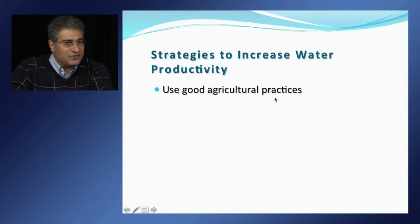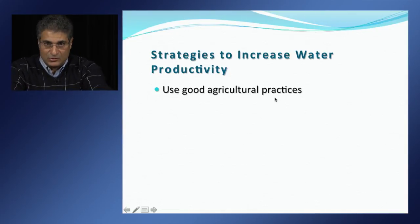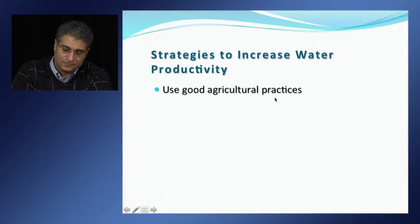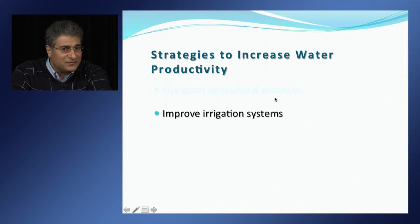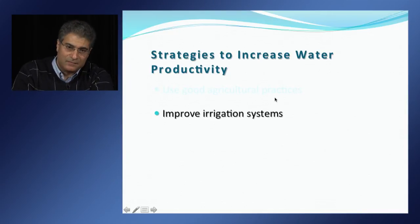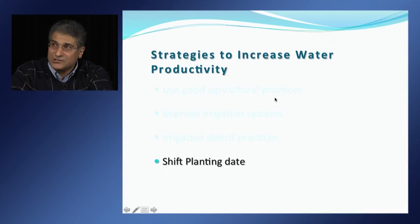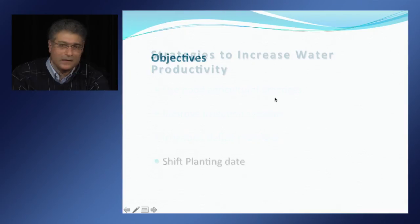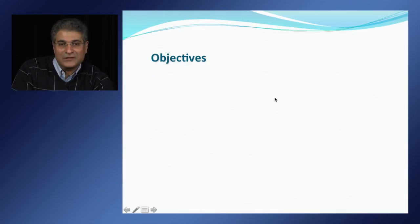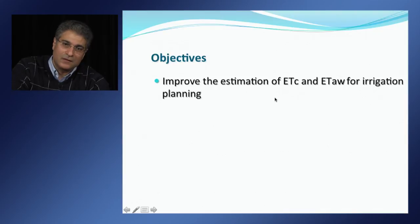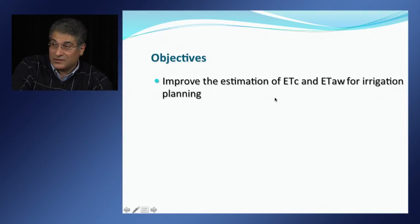Here are some of the strategies that we can use to increase water productivity: use good agricultural practices, improve existing irrigation systems for applying irrigation water more efficiently, conduct irrigation deficit practices, shifting planting dates. One of the main objectives of the COPPLUS application program is to improve the estimation of crop evapotranspiration and ET of applied water for irrigation water planning.